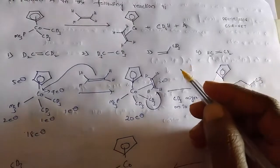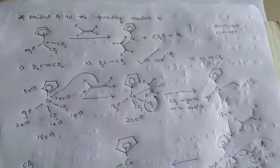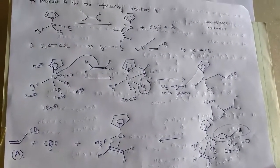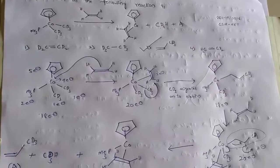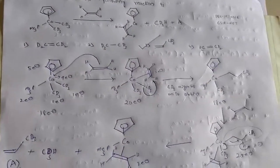From this, we get, the option C is the correct answer for the given problem. Here it is 18 electronic species because alkyne is 2 electron.